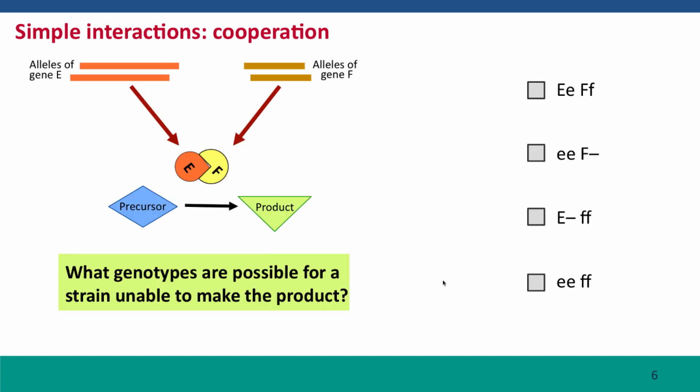So what genotypes would be possible for a strain that couldn't make the product?